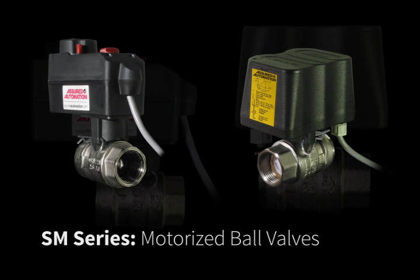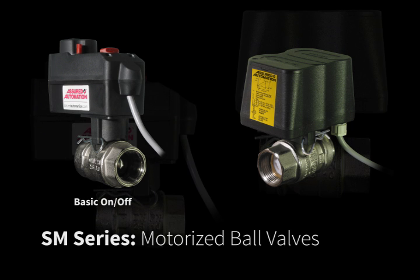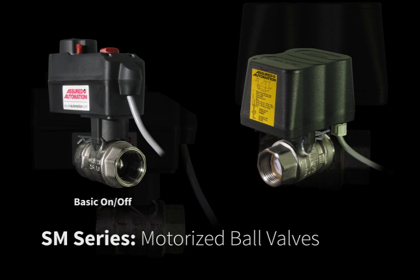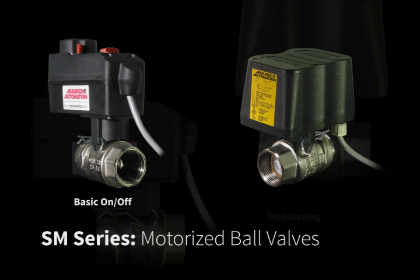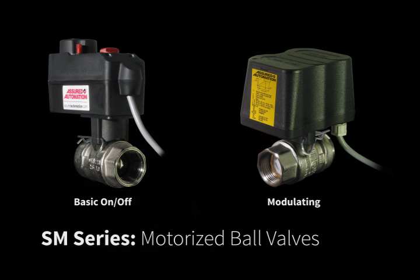There are two distinct types of 90 degree rotary actuators available. One is a basic on-off unit where the valve is either fully open or fully closed. The other is modulating and can be accurately positioned anywhere between 0 and 90 degrees using a control signal.